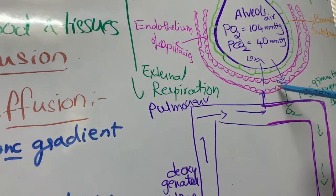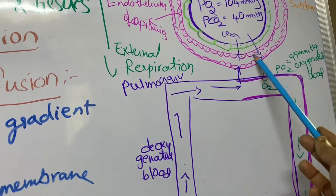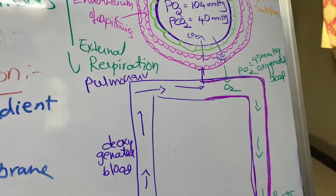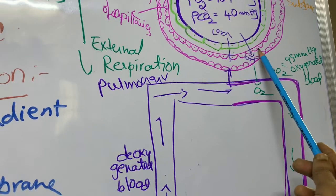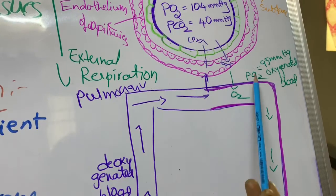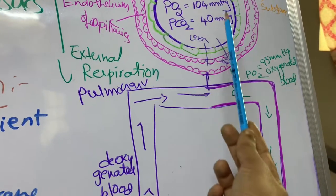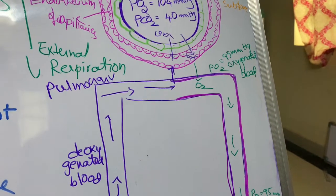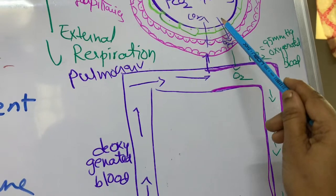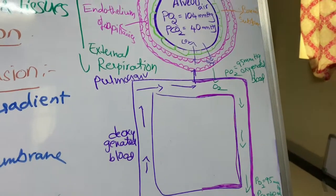In the blood capillaries surrounding the alveolus, the partial pressure of oxygen is 95 mm Hg — less than the alveolar pO₂ of 104 mm Hg. So oxygen diffuses from the alveolar cavity into the blood. This oxygenated blood then transports oxygen to the tissues through the systemic arteries.